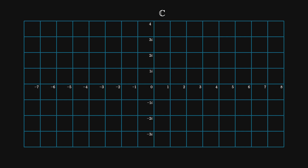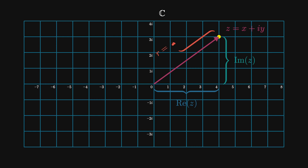We can imagine the complex plane like a regular Euclidean plane, where the real numbers are along the x-direction and the imaginary numbers are along the y-direction. This means that anything we can do with linear algebra, or planar geometry, can be implemented on the complex plane. For instance, complex numbers can be represented in polar coordinates, where the magnitude is the length of the vector and the argument is the angle with respect to the x-axis. The complex conjugate of a point z equals x plus iy is z-bar, which equals x minus iy. You can think about this as a reflection about the real axis.